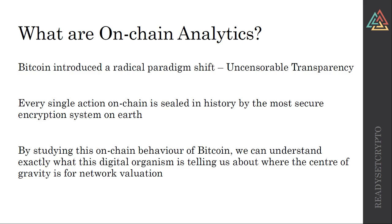The function of proof of work with the ever-increasing hash rate effectively secures anything that happens on-chain immutably forever. We can see all of those transactions, and when we start studying the behavior of Bitcoin, we can actually see what arguably the first digital organism to ever exist is telling us about the center of gravity for its network valuation. Bitcoin is always putting out information about where it is.